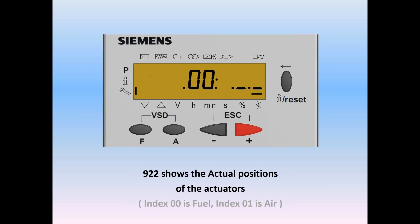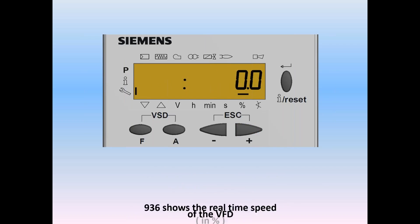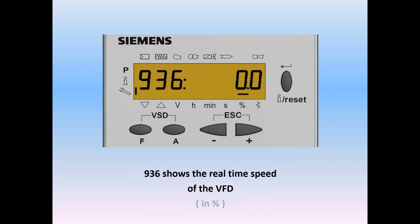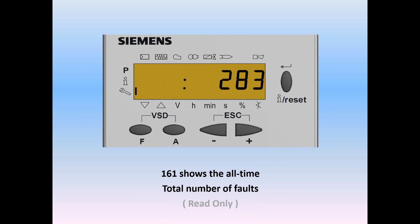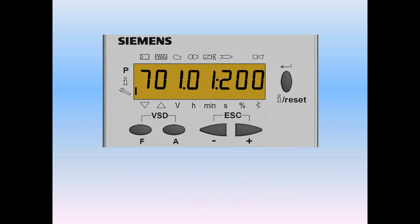Do a plus and we get 936, which shows the real-time speed of a VFD if equipped — in this case it's 0, with the bar above the percent sign confirming 0% VFD. Do a plus, and parameter 161 shows us the total number of faults — it's read-only. It tells you this system has experienced 283 faults in its entire lifetime. Do a plus, and here we are in the 700 series, which is the fault history on the LMV3.